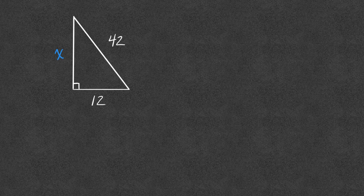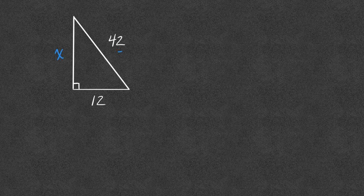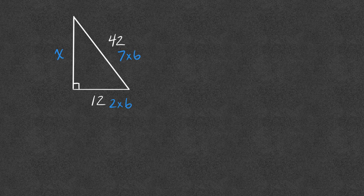if I recognize that that triangle has a common factor, then I can look at that 12 and 42 and say, hey, that's 7 times 6 and that's 2 times 6. So that would be the same thing as having this right triangle with a 7 and a 2.